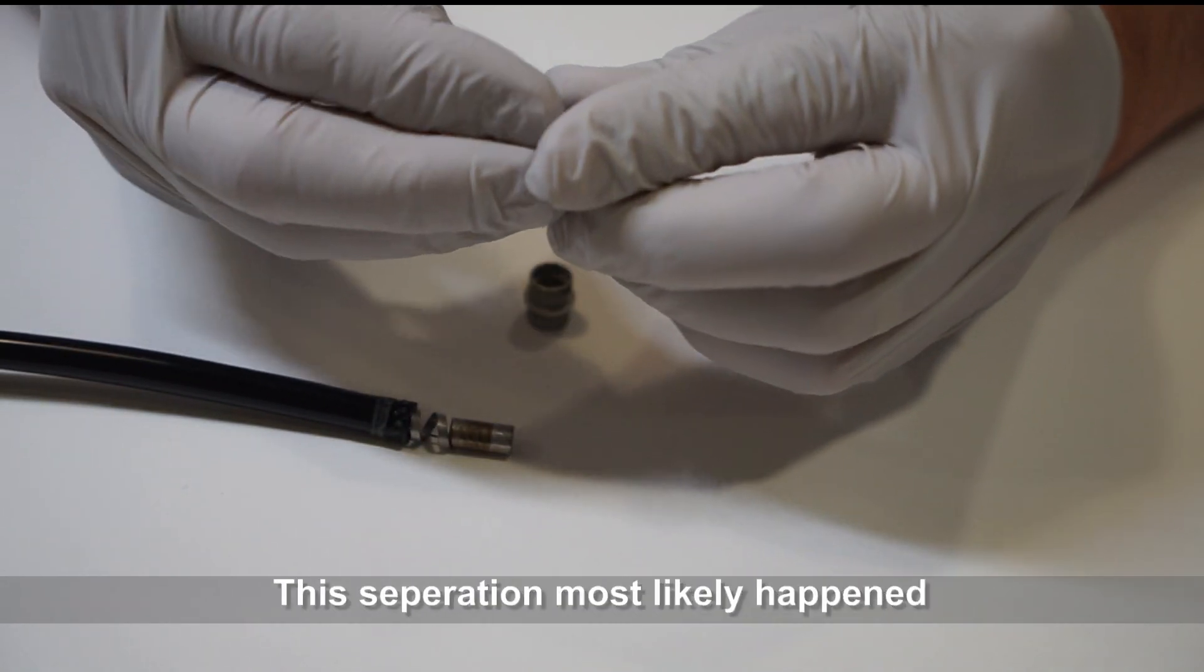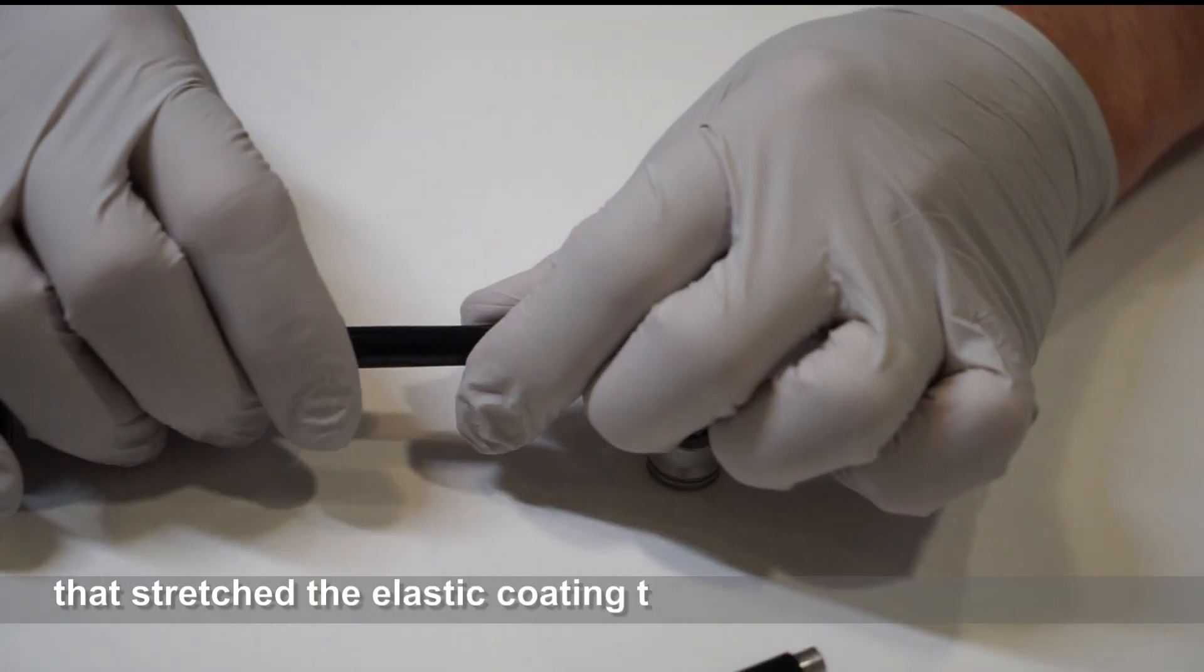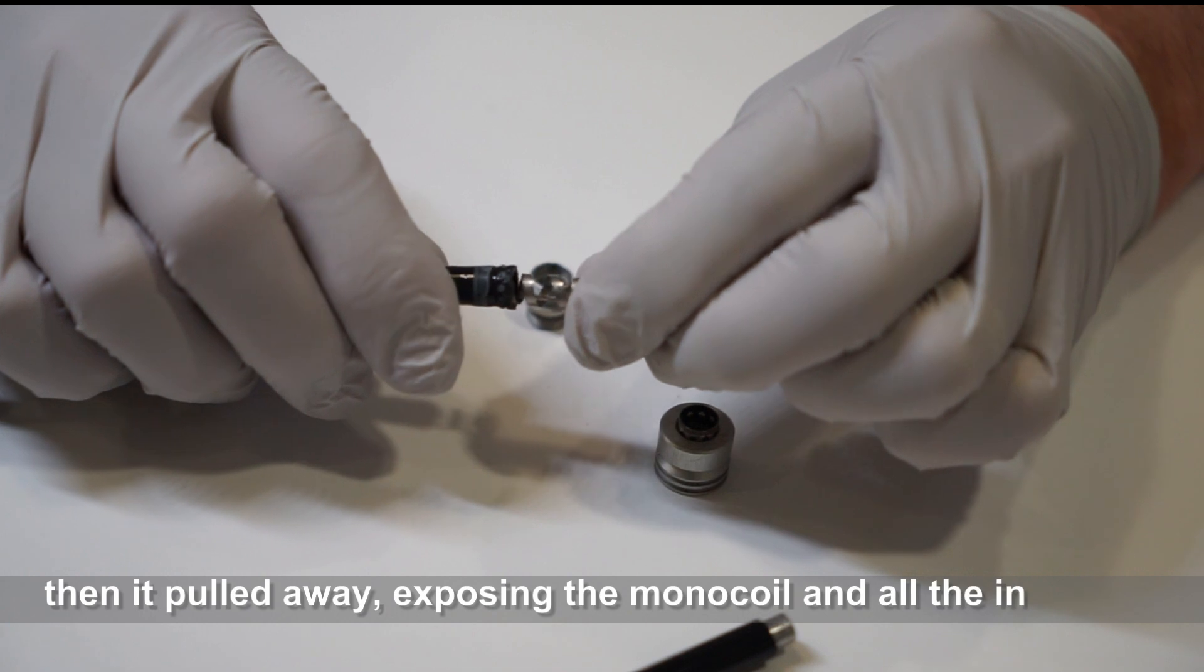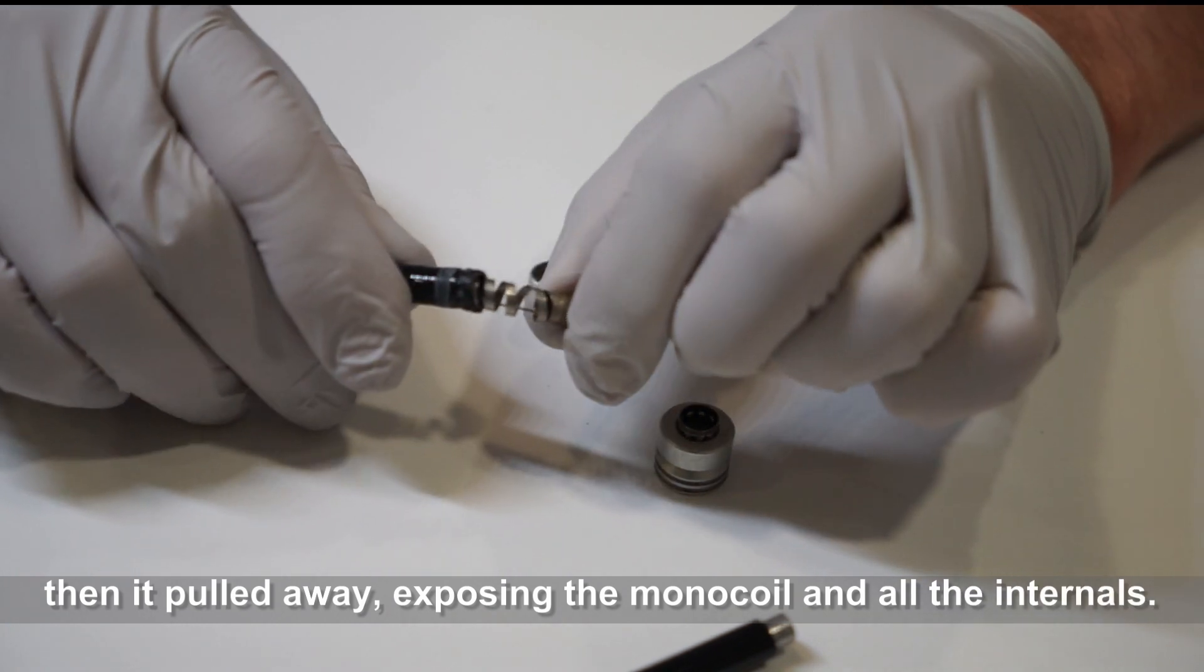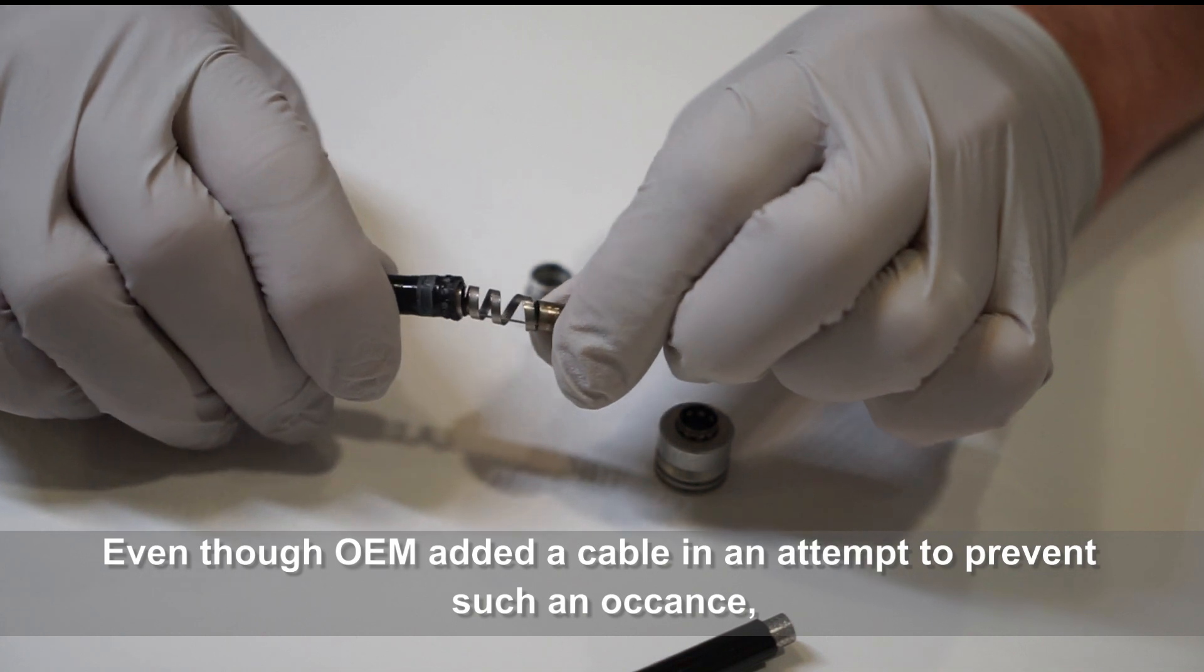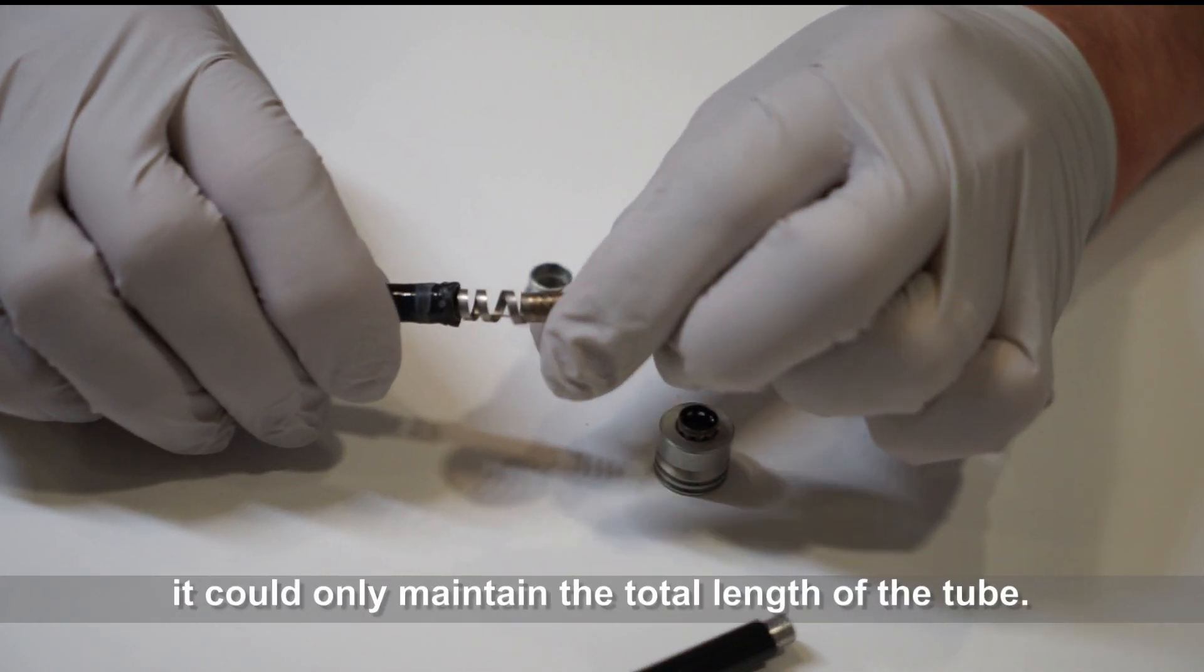The separation most likely happened when the doctor pulled on the cable that stretched the elastic coating thin, breaking the glue bonds. Then it pulled away, exposing the monocoil and all the internals. Even though the OEM added a cable in an attempt to prevent such an occurrence, it could only maintain the total length of the tube.